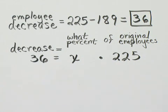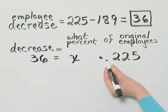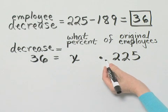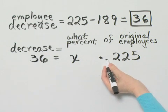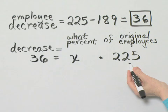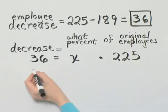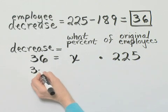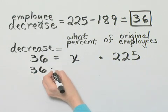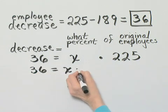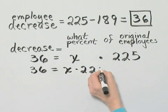To solve this for X, I will divide both sides, because this is multiplication. I'll divide both sides by the coefficient of X, which is 225. So I have 36 is equal to X times 225.